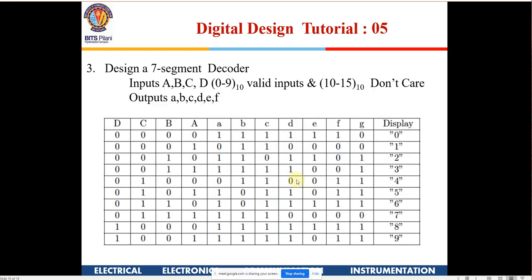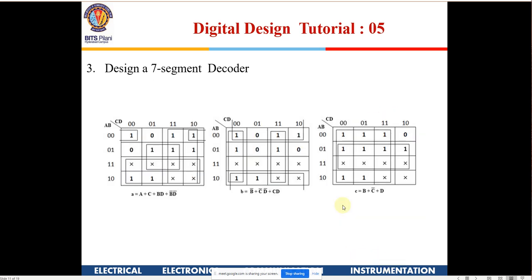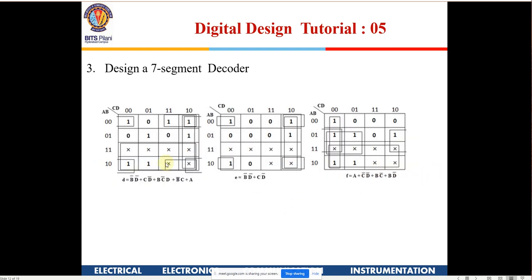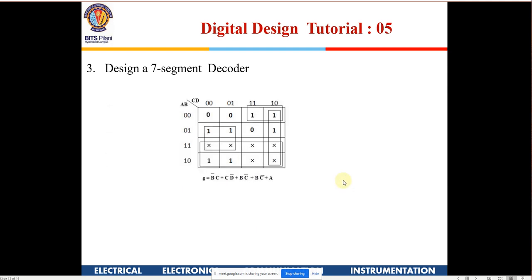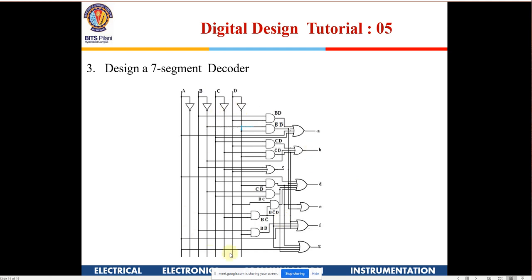You make the truth table for all 7 display segments individually. For values 10 to 15 we apply don't care conditions to simplify your expressions. Each of the 7 variables — A through G — requires a separate K-map for optimization. Once simplified, you can make a circuit from the result.